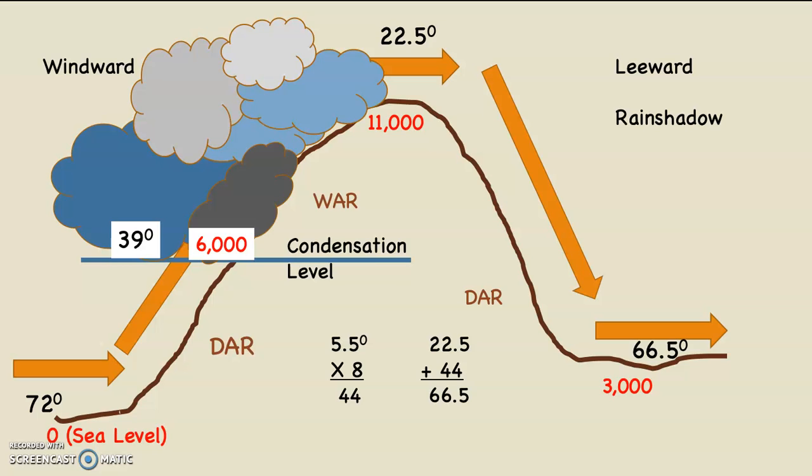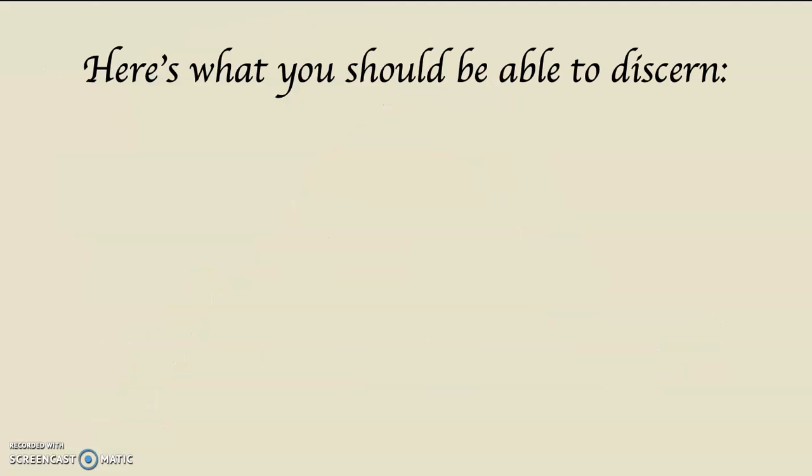Here we go again. Take a quick look at our math problem. 72 degrees at sea level on the windward side, 39 degrees at the condensation level at 6,000 feet, 22 and a half degrees at the top of the mountain, 66 and a half degrees at the bottom of the mountain on the leeward side. Remember, these are the things you should be able to discern.